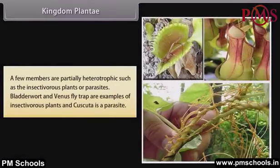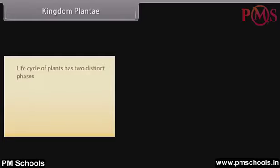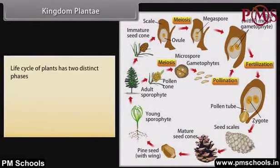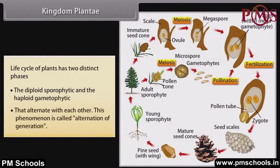A few members are partially heterotrophic, such as the insectivorous plants or parasites. Bladderwort and Venus flytrap are examples of insectivorous plants, and Cuscuta is a parasite. The life cycle of plants has two distinct phases — the diploid sporophytic and haploid gametophytic — that alternate with each other. This phenomenon is called alternation of generation.